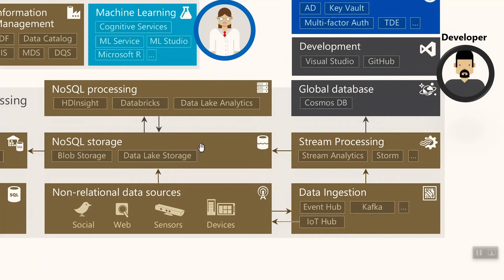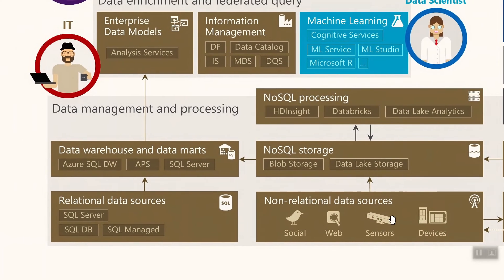Data from stream processing will go to NoSQL storage. It then makes sense to define structure on top of those NoSQL files. Using Azure SQL Data Warehouse and the PolyBase engine, you can ingest and move data into the Data Warehouse. In the Data Warehouse, you will have basically one source of truth — a higher quality of data for your organization.